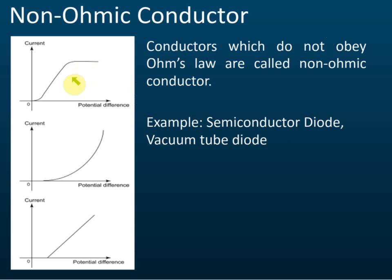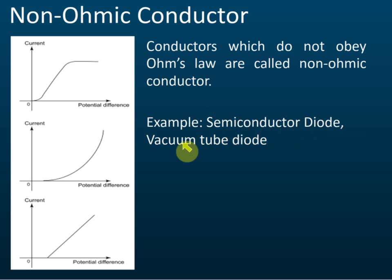If you do the experiment and it's not a straight line through the origin — it's a curve, or a straight line that does not pass through the origin — then the conductor does not obey Ohm's law. The current is not directly proportional to the potential difference. This can occur with a diode, for example. Conductors that do not obey Ohm's law are called non-Ohmic conductors, such as semiconductor diodes and vacuum tubes. So there are two types: Ohmic conductors, which obey Ohm's law and have current directly proportional to potential difference, and non-Ohmic conductors, which do not obey Ohm's law and whose graph is not a straight line through the origin.